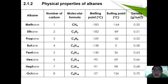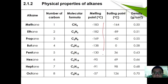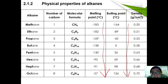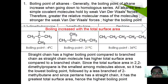Finishing with isomerism, we continue with the physical properties of alkanes. As you can see, progressing down, melting point and boiling point generally increase when going down the group, and the same goes for density, which generally increases going down the group. The boiling point of alkanes generally increases because all alkanes are simple covalent molecules.